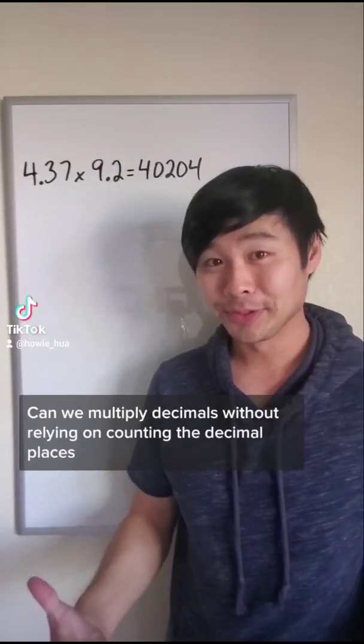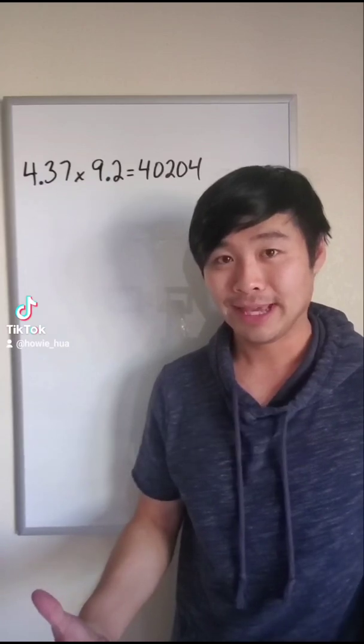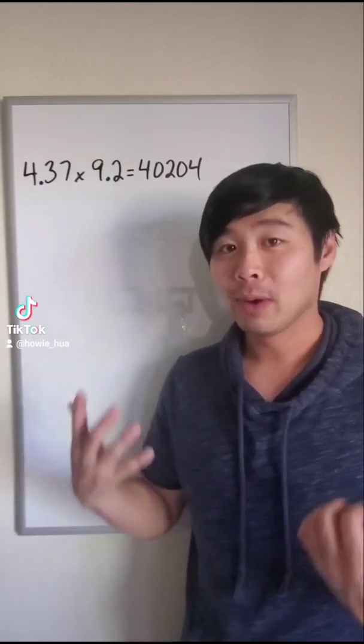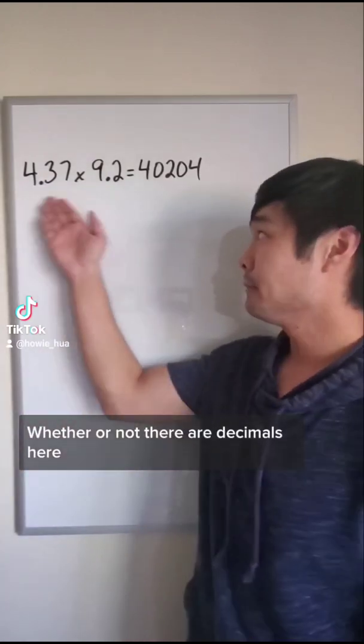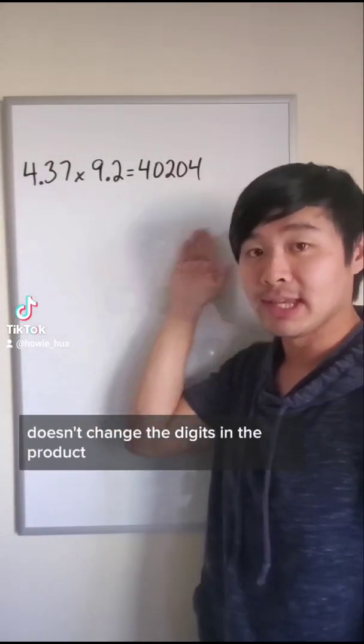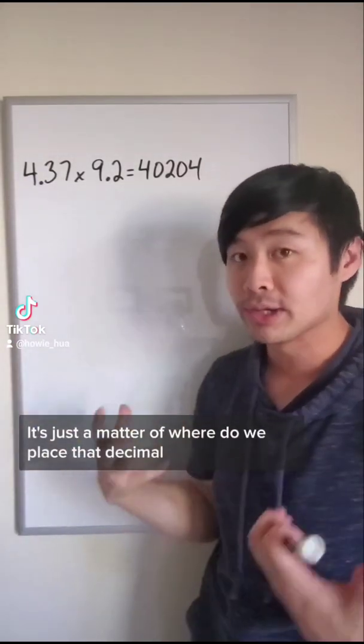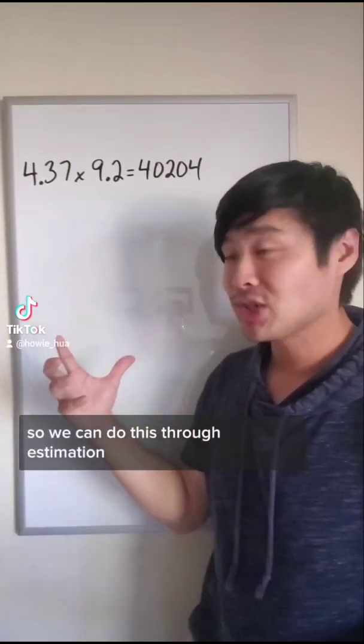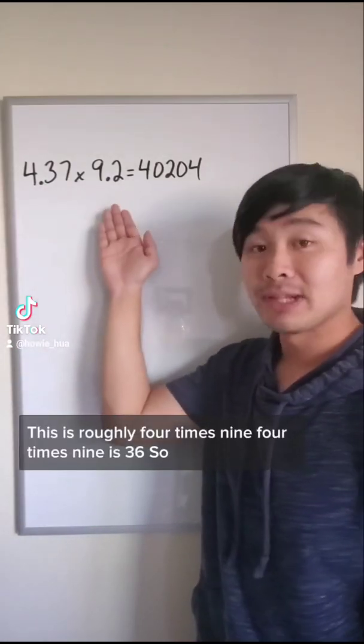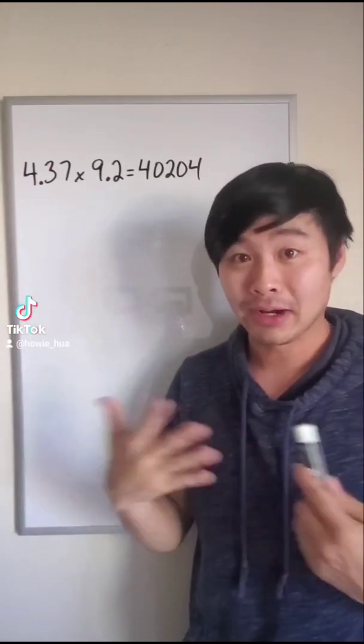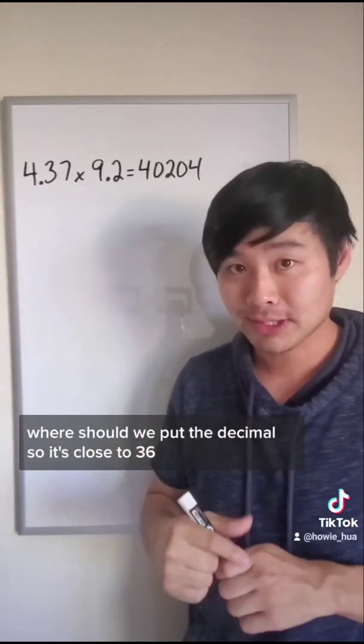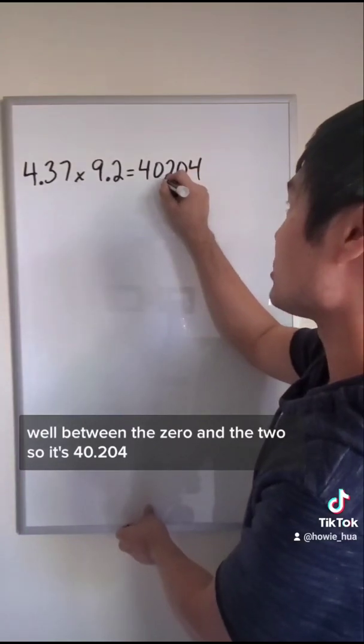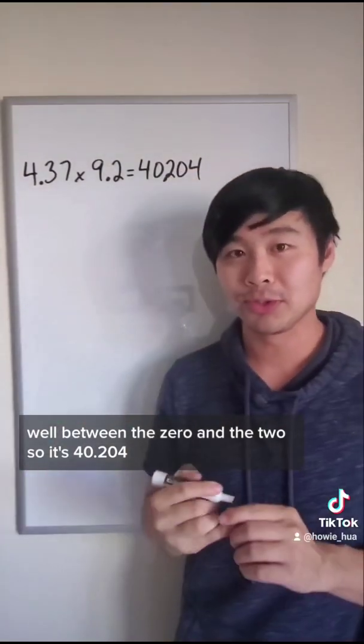Can we multiply decimals without relying on counting the decimal places? The answer is yes. Whether or not there are decimals here doesn't change the digits in the product. It's just a matter of where do we place that decimal? So we can do this through estimation. This is roughly four times nine. Four times nine is 36. So where should we put the decimal so it's close to 36? Well between the zero and the two. So it's 40.204.